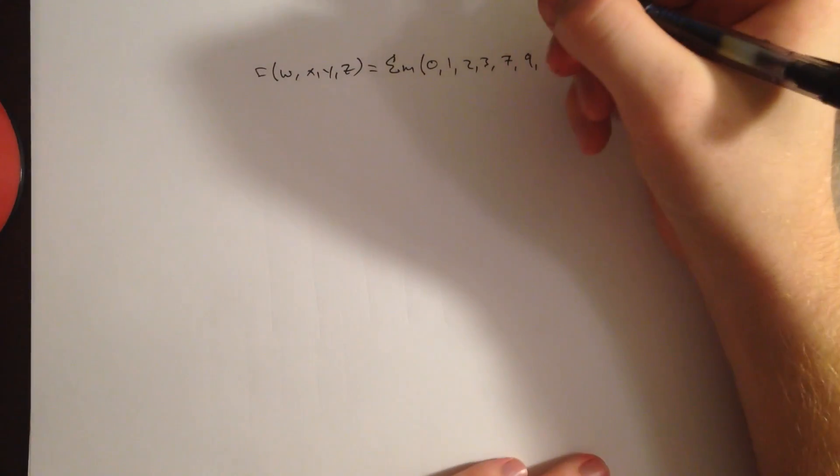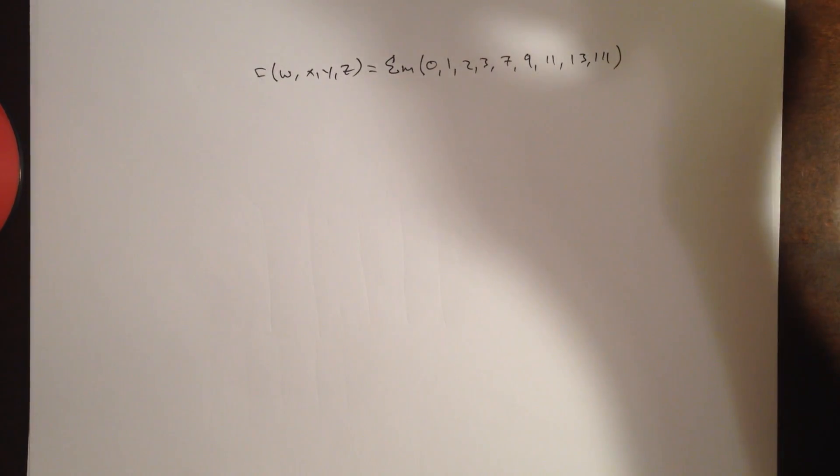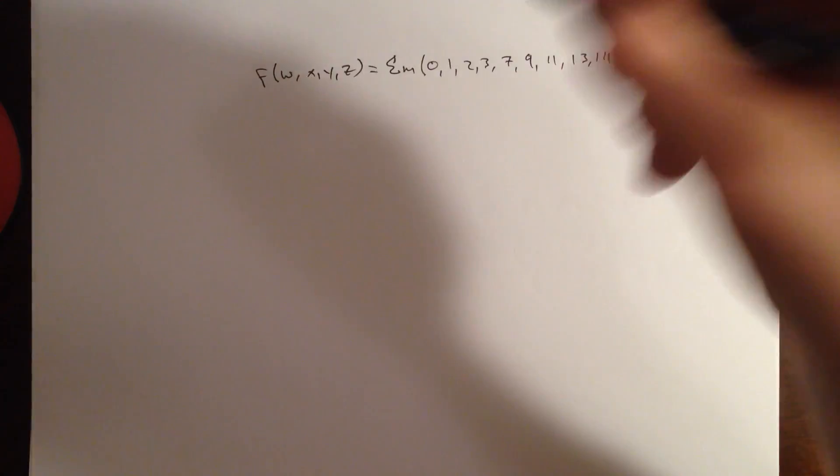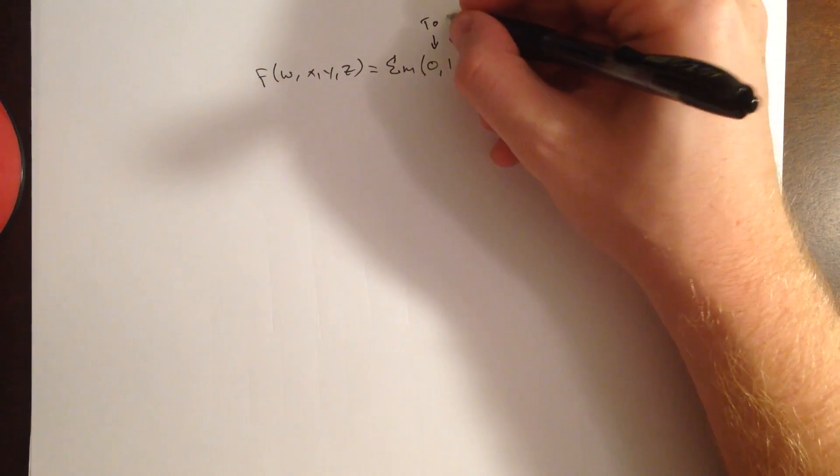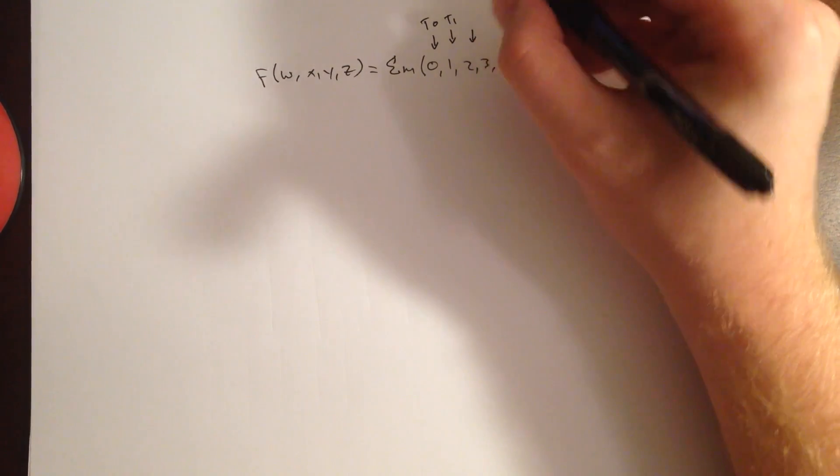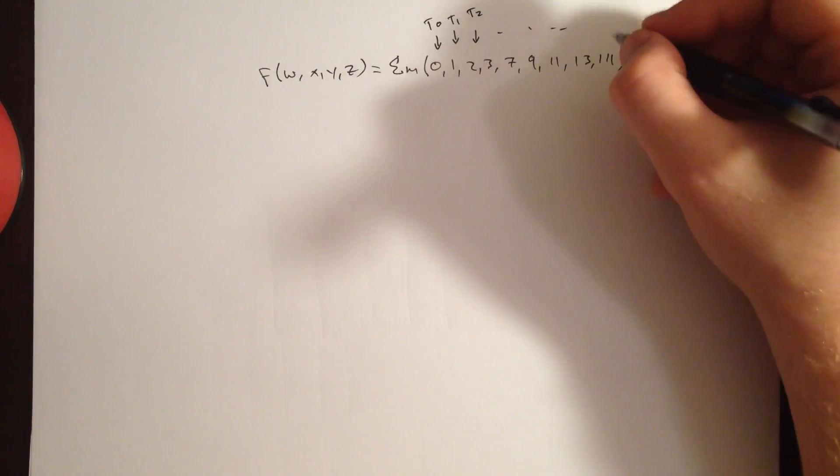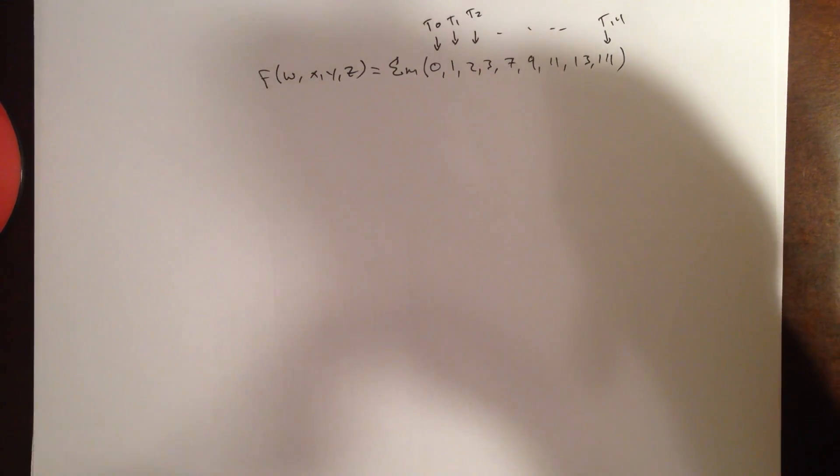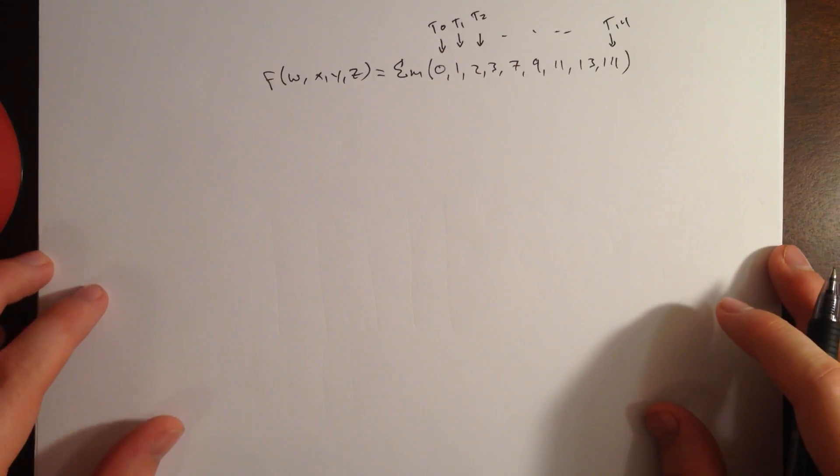Okay, so this is pretty much saying that if we make a four-variable truth table, we are going to have a 1 for our output f at terms 0, term 1, term 2, all the way down to term 14.